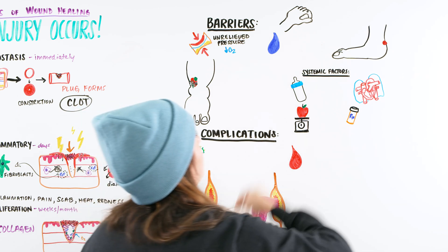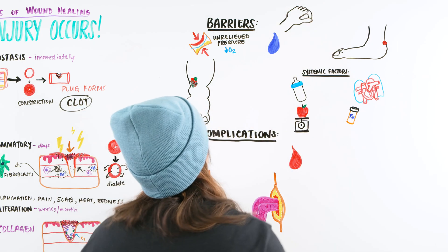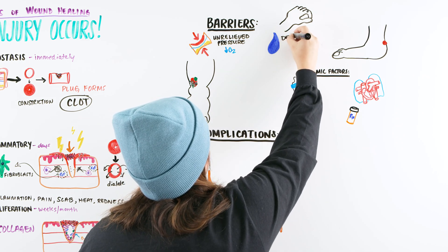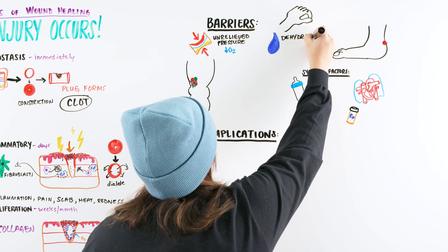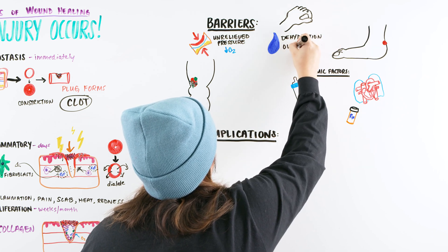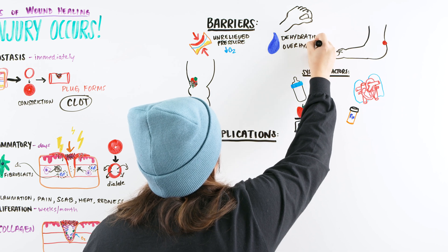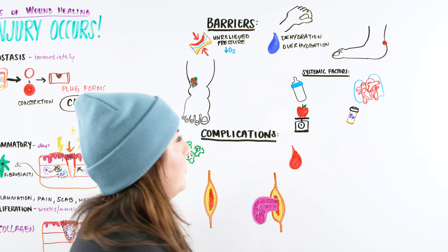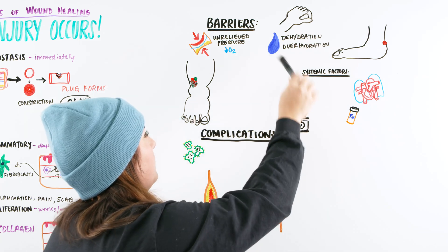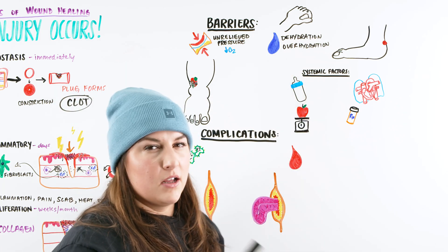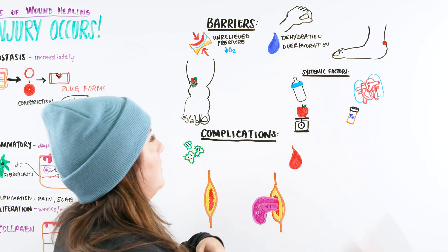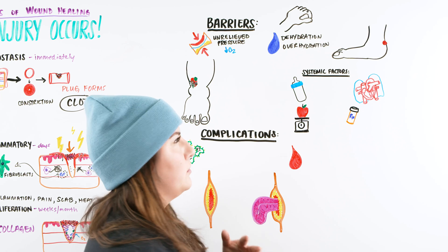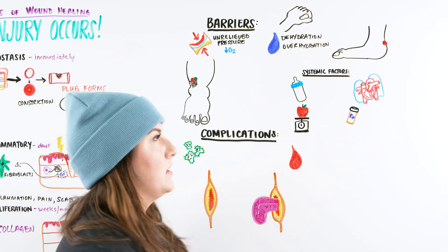Moving on, we assess skin turgor — checking for dehydration or over-hydration, both of which are barriers. If dehydrated, you're not getting circulatory volume of blood going through the body, so there's decreased transmission of nutrients and oxygen to the wound. Over-hydration is the same — a fluid-filled patient will have decreased blood flow to that area as well.